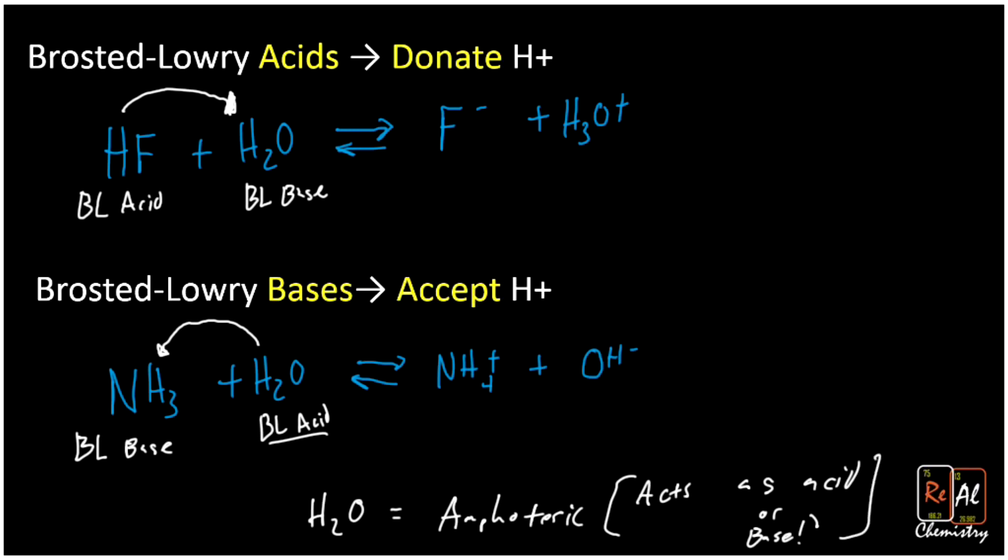Some other vocabulary that you should be familiar with when it comes to Bronsted-Lowry acids and bases are conjugate acids and bases. Here's the trick. If you have a Bronsted-Lowry acid, after it donates a hydrogen, it becomes a conjugate base. So that means fluorine is a conjugate base.